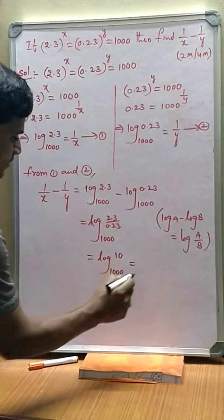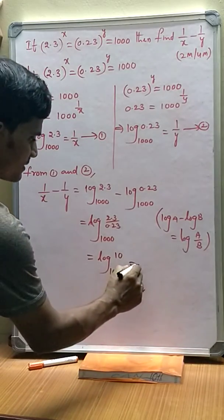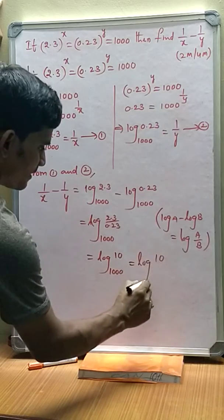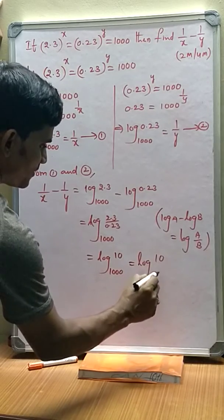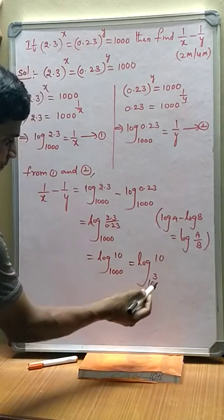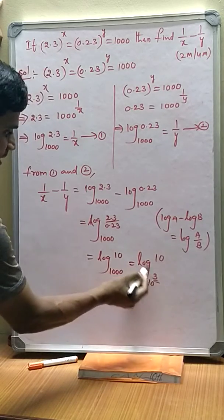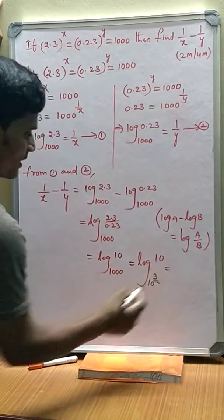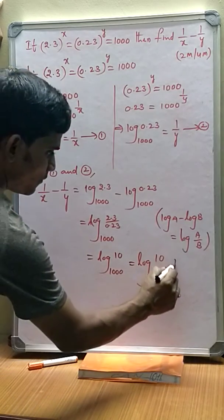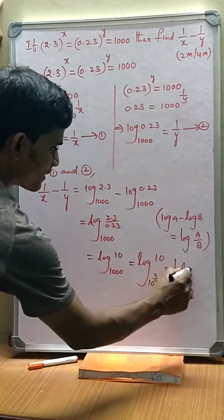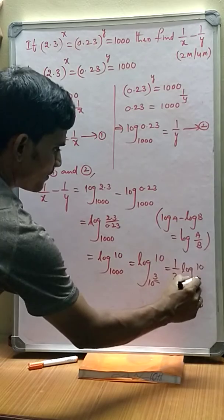This is in turn can be written as log 10 base 1000. If there is a power to the base, it can be written as a denominator in the coefficient: 1 by 3 log 10 base 10.